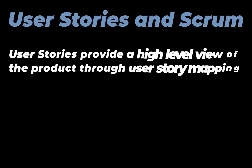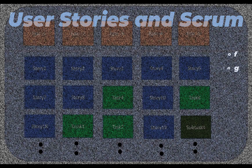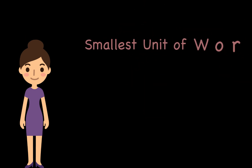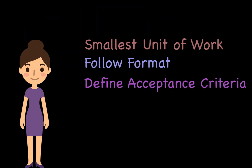User stories also provide a mechanism to get a high-level view of the product using the story mapping technique. User story mapping is a visual representation of the product backlog using different user stories to get a bigger picture. So that was all — user stories are the smallest unit of work in Agile, and they should follow a certain format when written, and should have criteria to be estimated and tested.